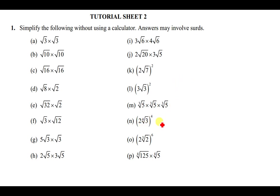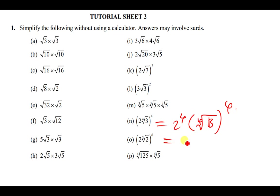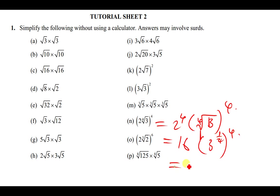For (2·⁴√3)⁴: distribute the power to get 2⁴ × (⁴√3)⁴ = 16 × (3^(1/4))⁴ = 16 × 3^(1/4 × 4) = 16 × 3 = 48.